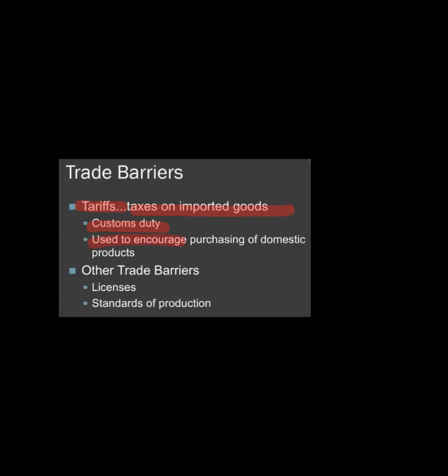The government uses tariffs to encourage purchasing of domestic products. Other trade barriers include various non-tariff measures such as requiring an import license — if you want to import certain products, you need to obtain a license. There are also standards of production requirements. So the barriers discussed include tariffs, import quotas, voluntary export restraints, licensing requirements, and production standards.